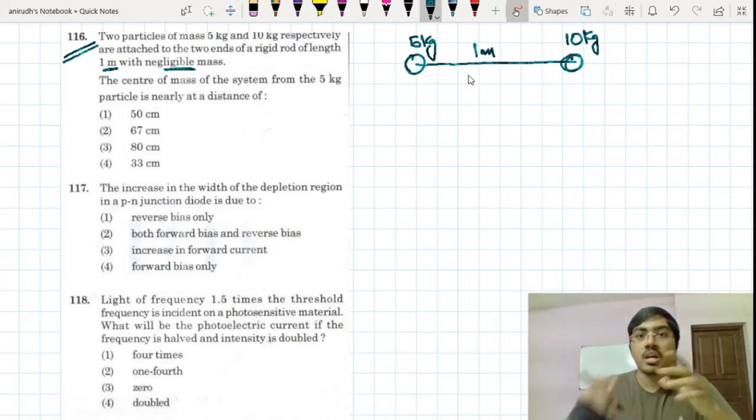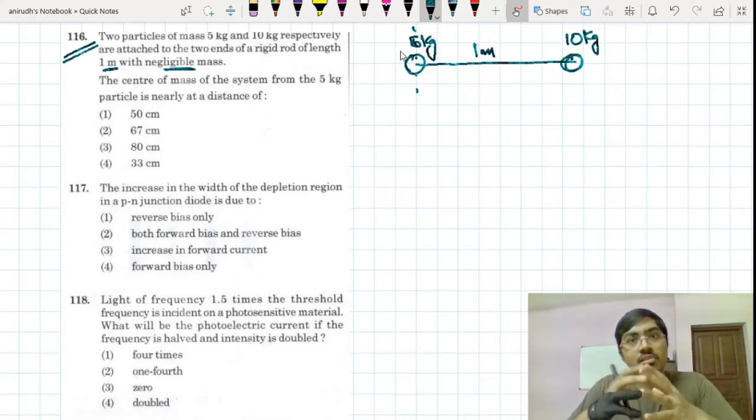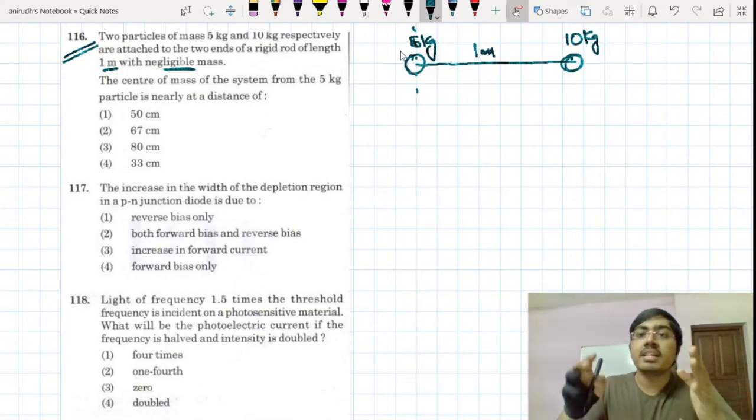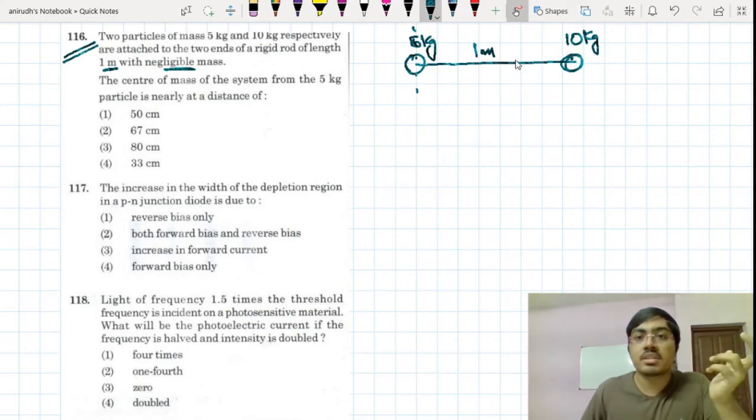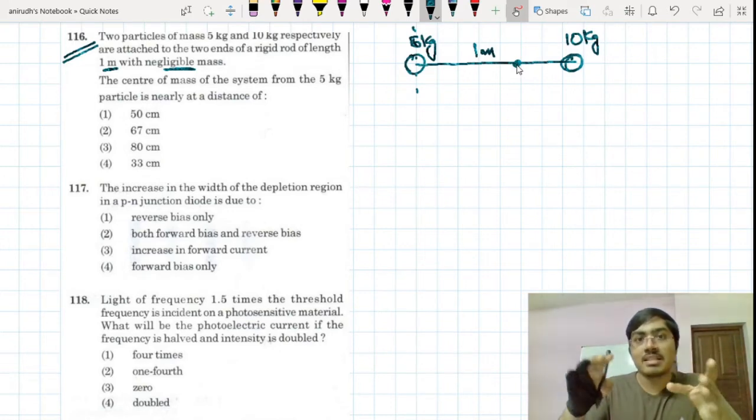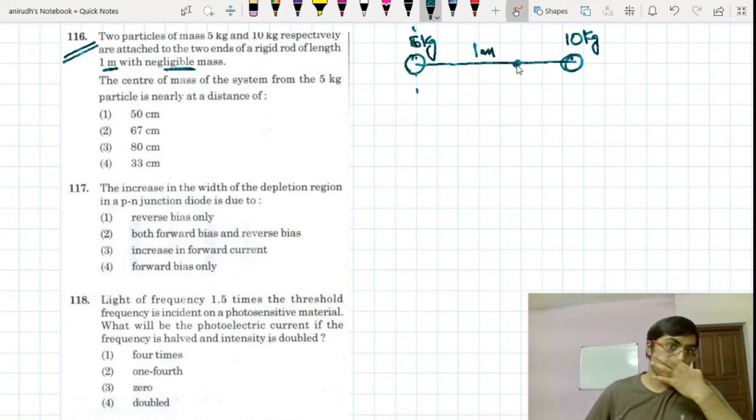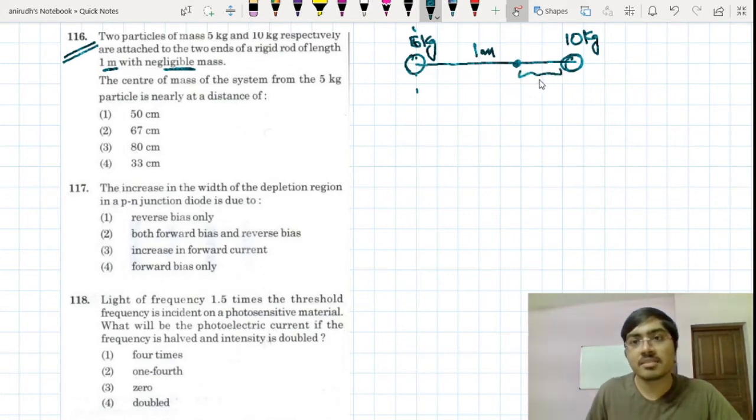So either you can find the position of center of mass using m1r1 plus m2r2 divided by m1 plus m2. You can take this as the origin. But another way is, we know that the center of mass is actually nearer to the heavier body. So nearer to the heavier body, somewhere like this, you can take the inverse ratio of mass as the distance from each of them.